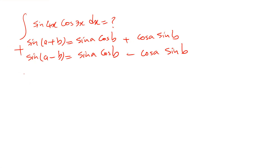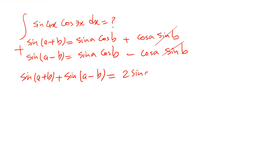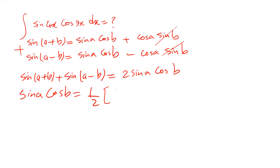So if you add these two equations, you'll get that sine(a + b) plus sine(a − b) will be equal to — the cosine a sine b terms cancel out — two sine a cosine b. Therefore, sine a cosine b will be equal to one divided by two times sine(a + b) plus sine(a − b).